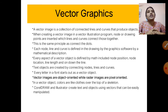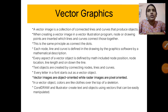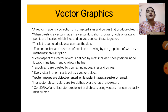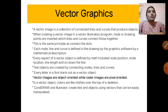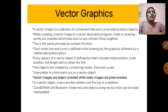This is the same principle as connecting the dots. Each node, line, and curve is defined in the drawing by the graphic software using a mathematical description. Every aspect of a vector object is defined by math, including node position, node location, and line length.